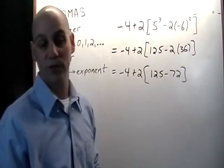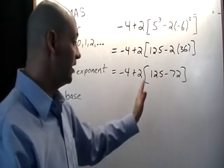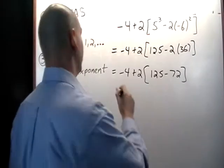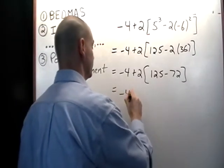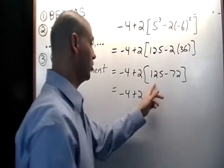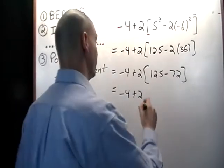And then we end up with 125 minus 72, and again we're still working within this bracket here. And so we can easily calculate that and that's going to be 53.